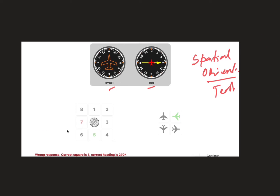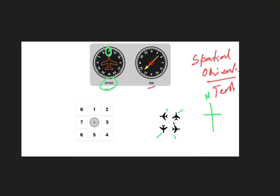Now let's understand aircraft heading. If the diagram says east, then any aircraft pointing in that direction is in an easterly direction. So if the nose points east, the aircraft is heading easterly — that is how you identify aircraft heading direction.